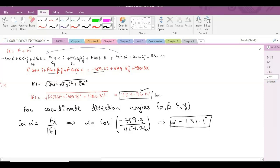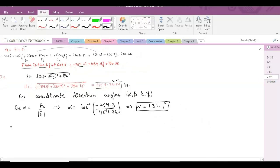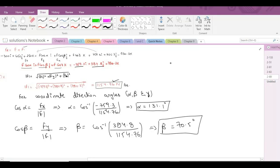Now you have to repeat the same procedure to find beta and gamma. So cos beta equals Fy over the magnitude of force F, which equals cos inverse of 384.8 divided by 1154.76. So from here, beta becomes 70.5 degrees.